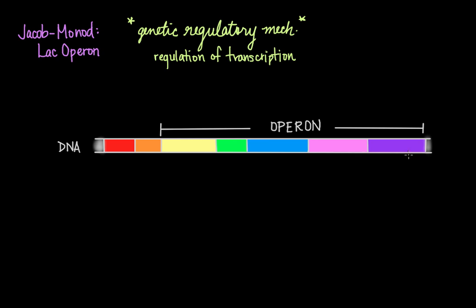The operon drawn here represents the LAC operon, which is an example of an inducible set of genes responsible for importing and breaking down the sugar molecule lactose to use as a source of energy. If glucose — the ideal source of carbon and energy for a cell — is not available, the cell has a backup source of energy in the form of lactose. The name LAC operon comes from its inducer molecule: it is the presence of lactose that actually induces the transcription of the genes in this LAC operon.